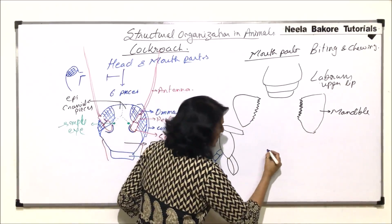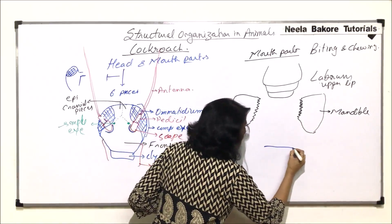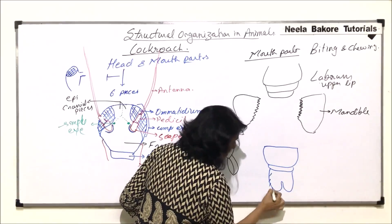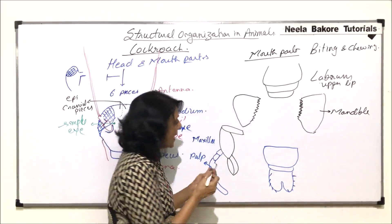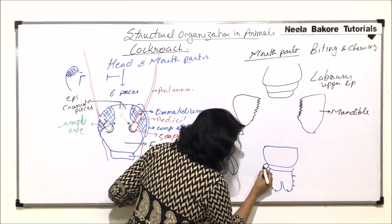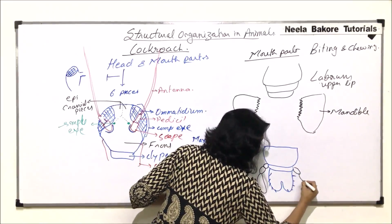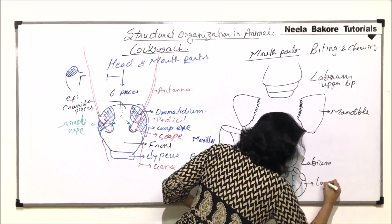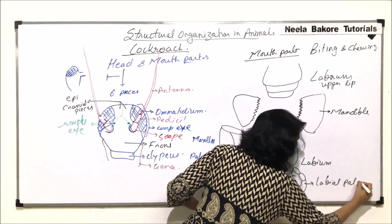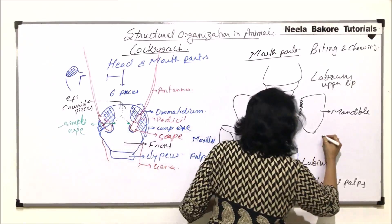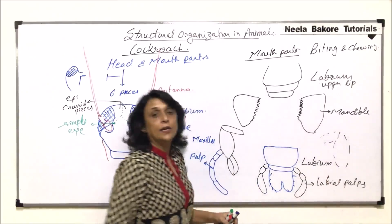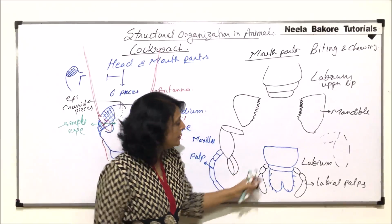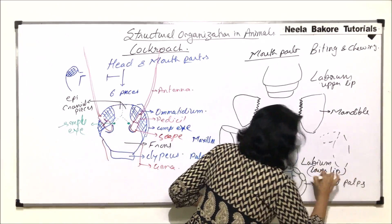Now let us come to the lower lip. The lower lip has a bigger piece, a smaller piece, and two structures with bristles. It also has three-segmented palps. The lower lip is known as the labium, and these are known as the labial palps. Paired structures in the mouth parts are the mandibles and the maxillae, while the upper lip and lower lip are individual unpaired pieces.